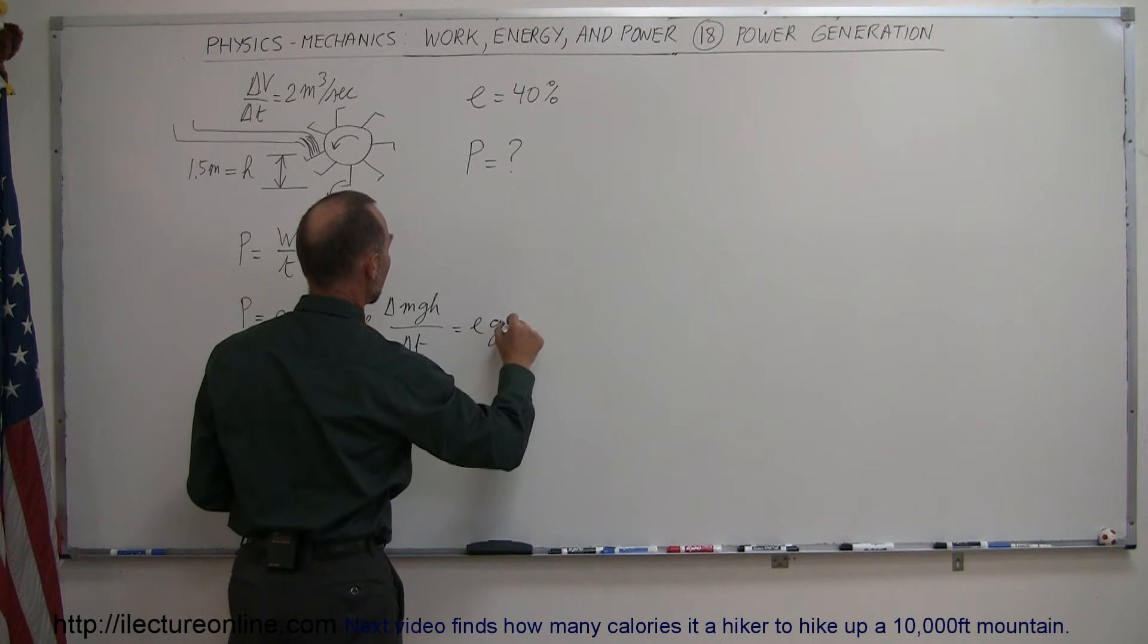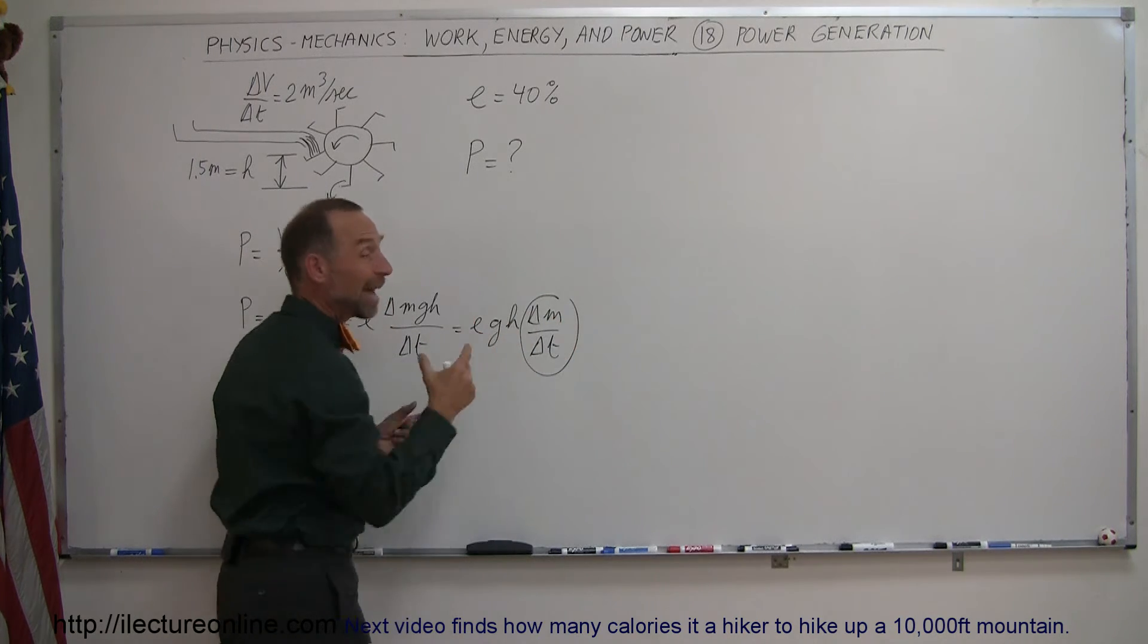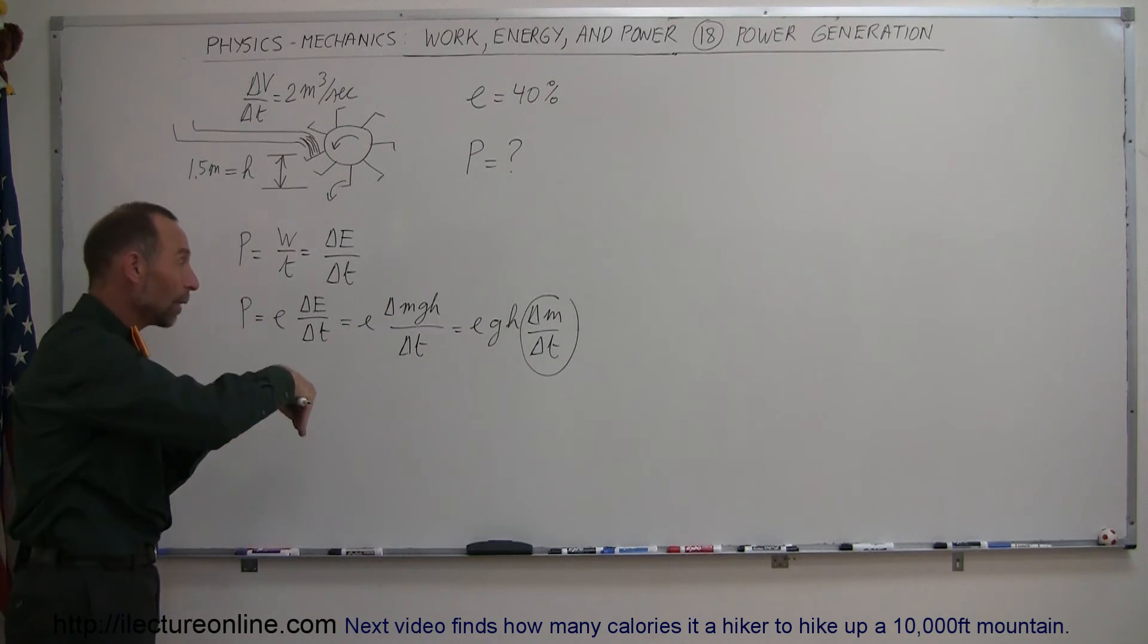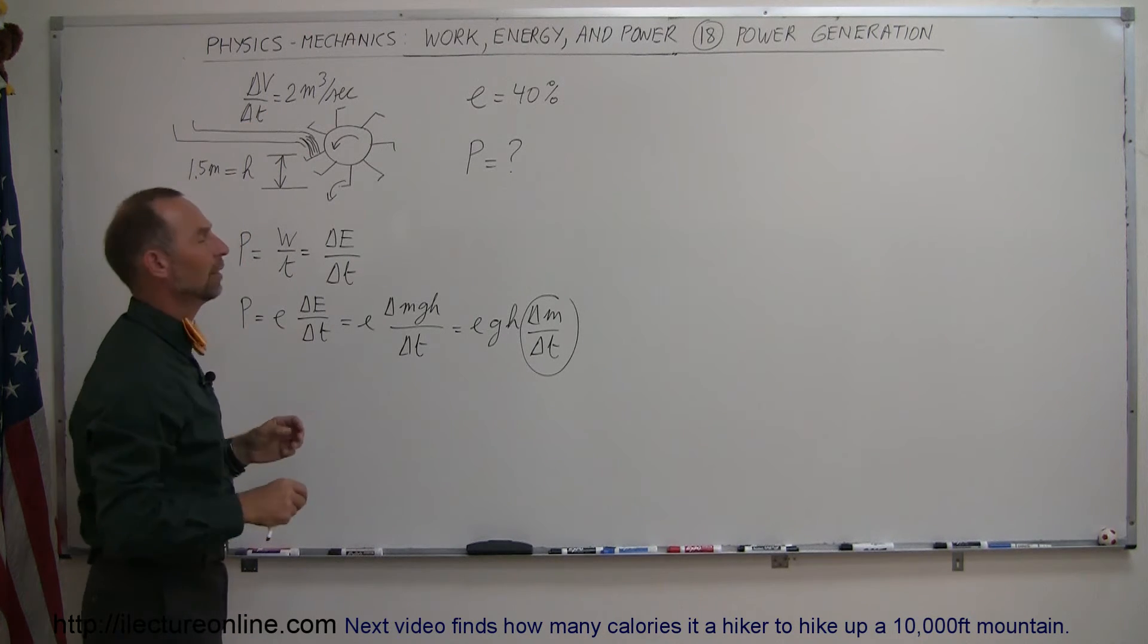This is equal to εgh times the amount of mass per unit time. So now we have to somehow relate the amount of mass of water that's going into our operation here to the amount of volume of water.